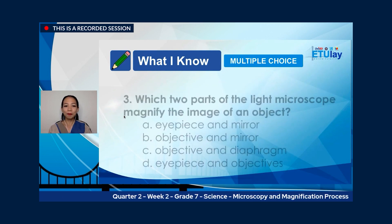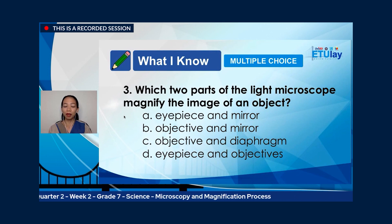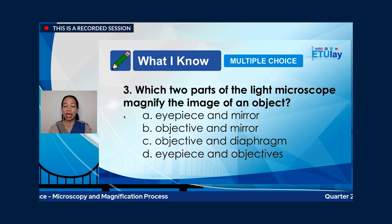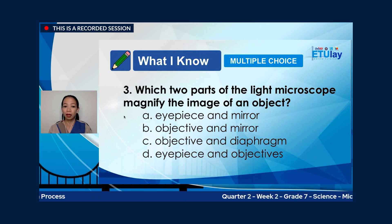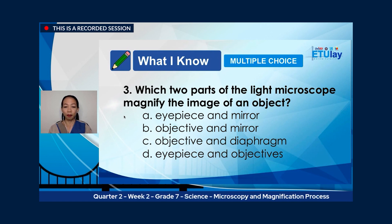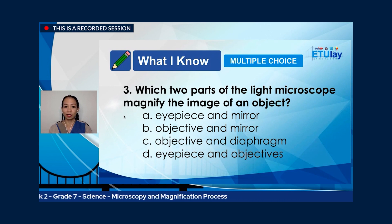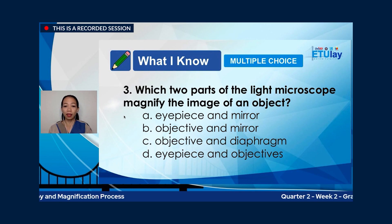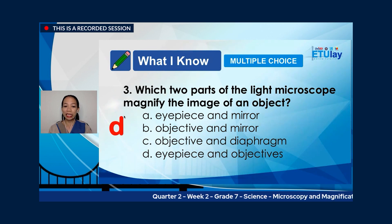Number three: which two parts of the light microscope magnify the image of an object? A. Eyepiece and mirror. B. Objective and mirror. C. Objective and diaphragm. Or D. Eyepiece and objectives. The correct answer is letter D, eyepiece and objectives.